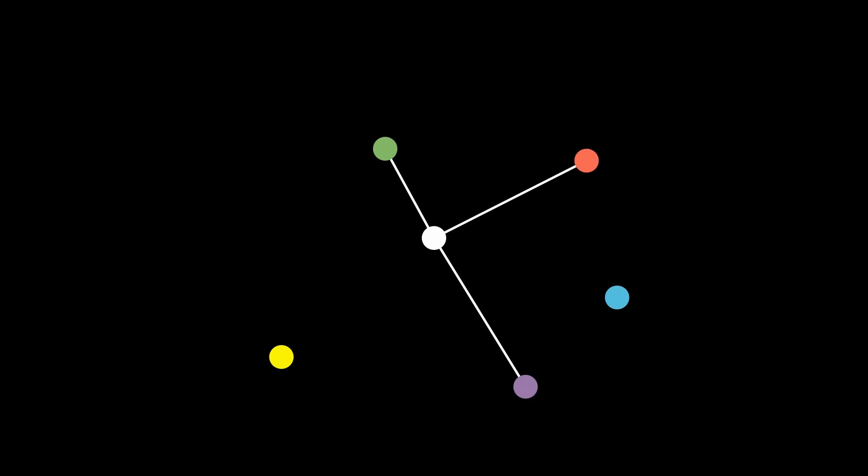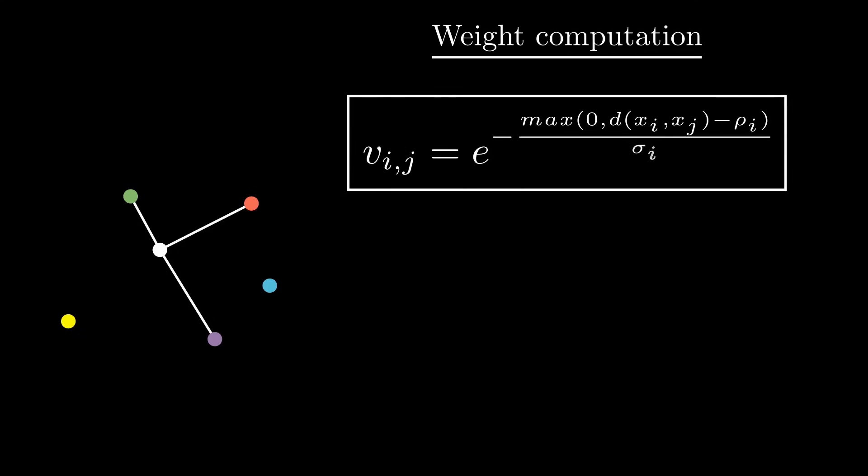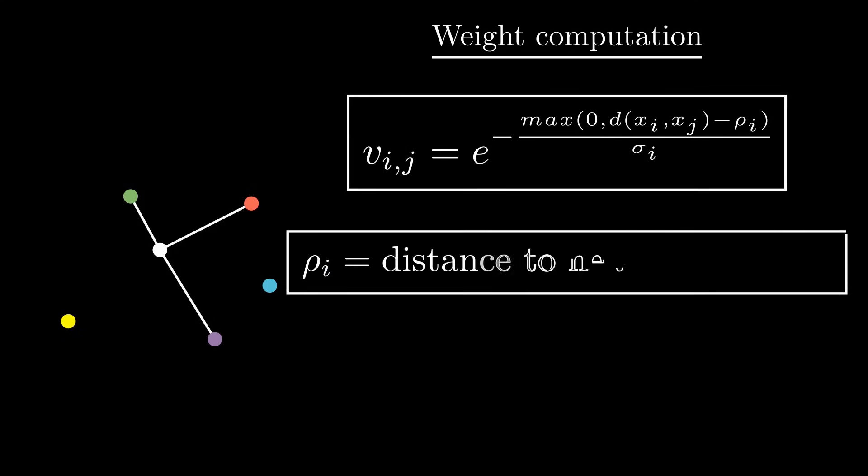This gives us a first binary graph, which we'll transform into a weighted graph to represent how close each point is to its neighbors. We achieve this by applying an exponential decay over the distances between a point and its neighbors. We offset this decay by the distance rho to the closest neighbor so that the closest neighbor keeps a weight of 1. As you can see, we have a similar formula to t-SNE, but we don't normalize this quantity, making it much faster to compute.